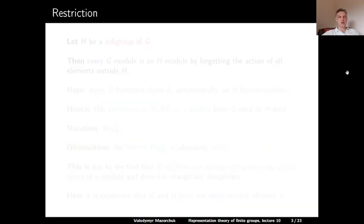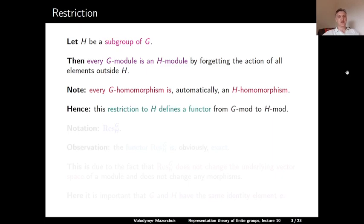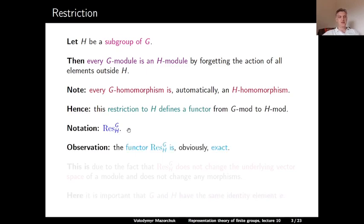Let us talk about restriction. Let H be a subgroup of G. Then every G-module is an H-module by forgetting the action of all elements which are not in H. Also, every homomorphism of G-modules is automatically a homomorphism of H-modules for this restricted action. Hence, the restriction to H defines a functor from G-mod to H-mod. We will denote this functor by restriction from G to H. Since the restriction functor doesn't change the underlying vector space, this functor is exact.